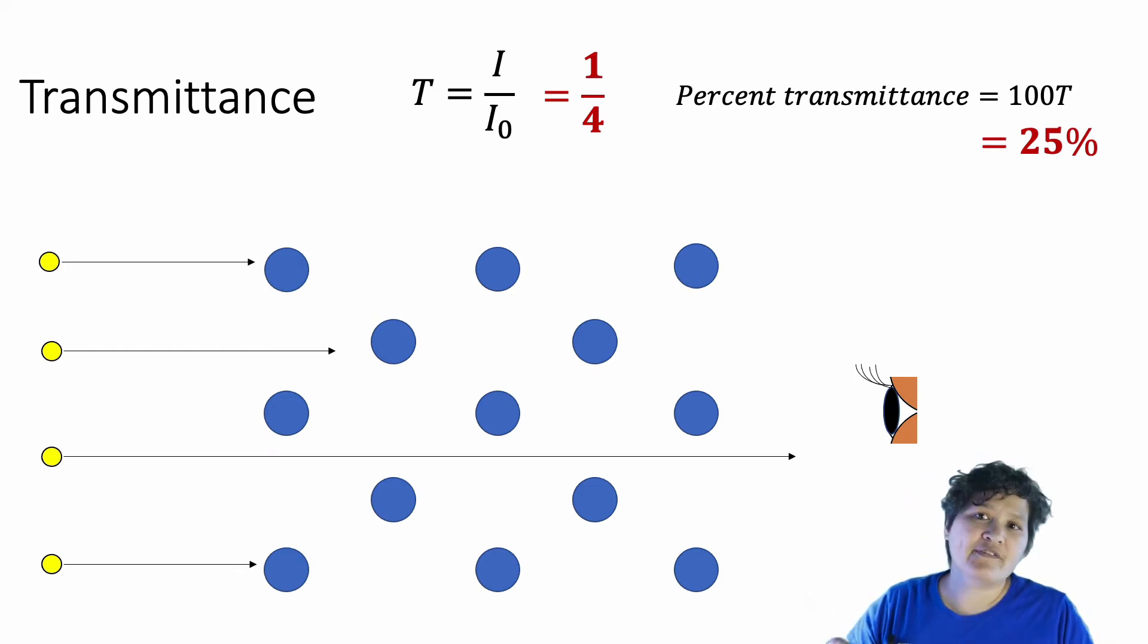Now, what affects how much light is transmitted? First of all, it's dependent on the substance that the light is passing through, which is probably fairly obvious to anyone who has observed the world. A lot of light passes through glass, while very little passes through fabric.